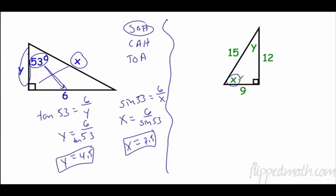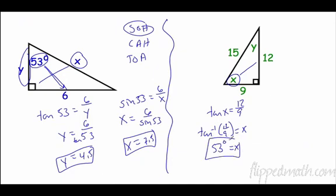So we can find them really any way we want. Let's use tangent. Tangent of x equals opposite over adjacent, so the inverse tangent of 12 over 9 equals x. And if you do that, you're going to get 53 degrees.